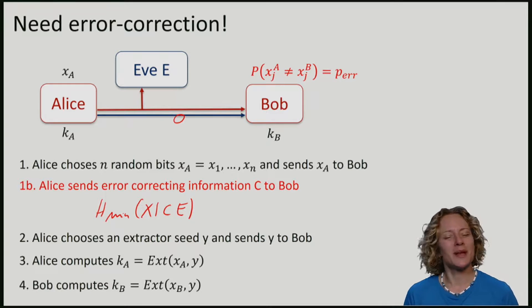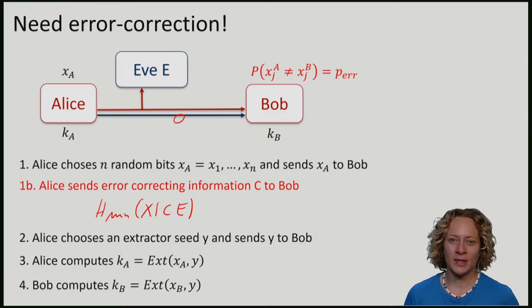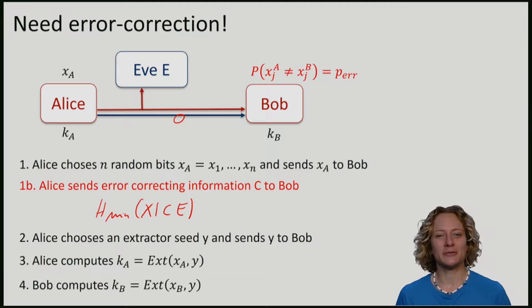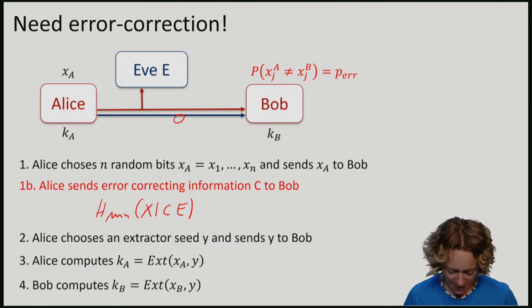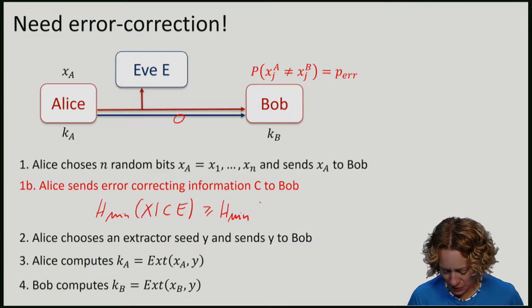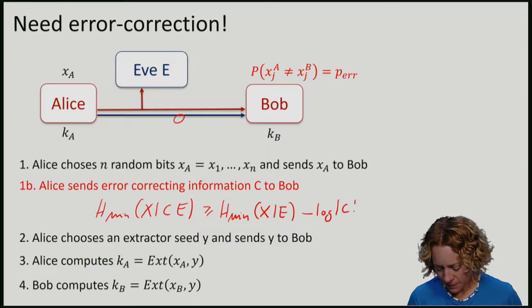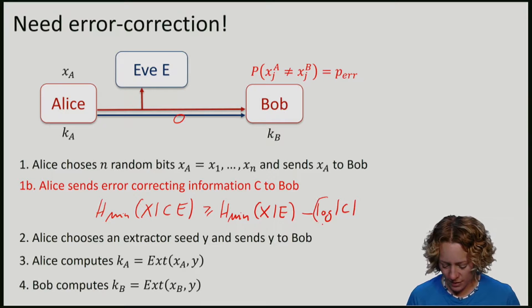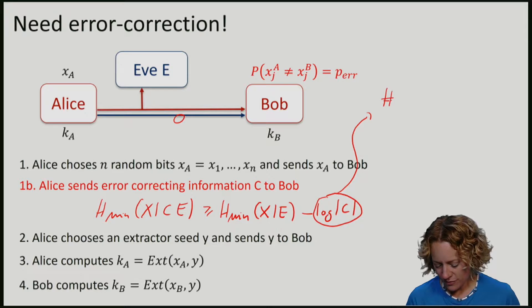To deal with this, we apply our usual trick. Namely, we know that the register C can only help so much. Or more precisely, this min-entropy is never smaller than the min-entropy of x given E, minus log of the size of C. So this here is exactly the number of bits of error-correcting information that Alice sends.